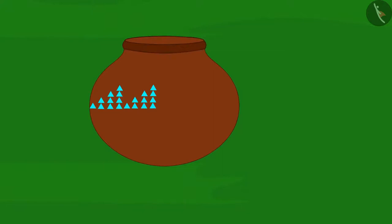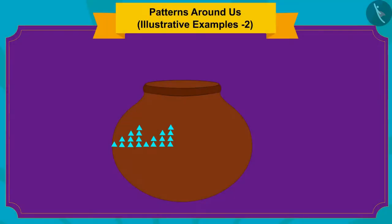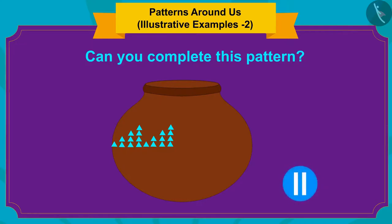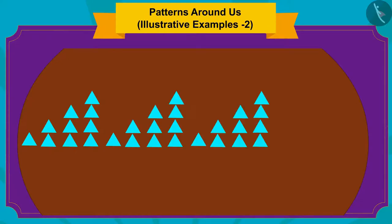This time, they saw an earthen pot on the way. Such type of an incomplete pattern is made on the pot. You can find the answer by stopping the video. Well done, children!